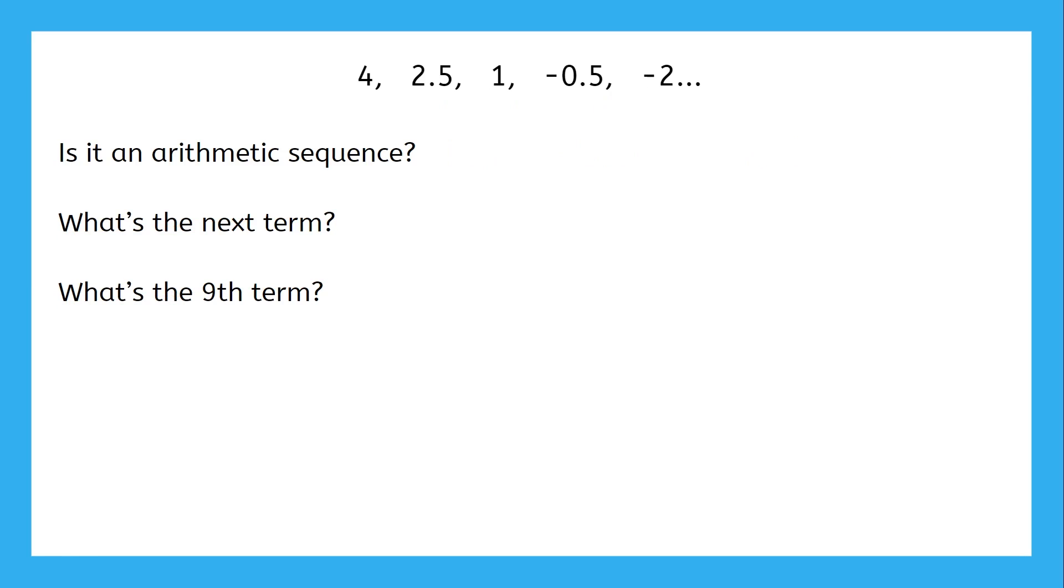Sequences can involve any numbers, including decimals, fractions, or anything else. That doesn't change the process at all. First, we see if the sequence is arithmetic by checking for a common difference. For this sequence, the common difference is subtracting 1.5.